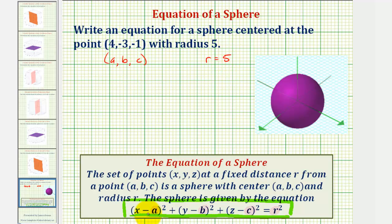So performing substitution into our equation, we would have the quantity (x - 4)² plus the quantity (y - (-3))².